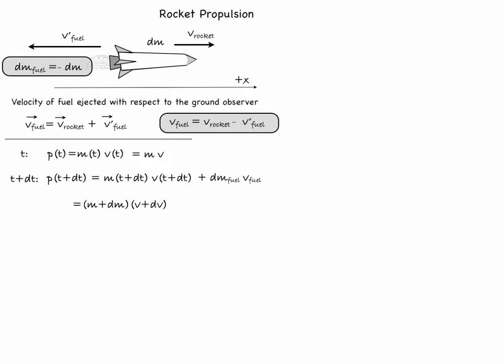We will write for the momentum of the system that is going to be equal to (m plus dm) times (v plus dv) for the rocket term and minus dm times (v minus v'_fuel) for the fuel term. Here I have dropped the subscript for the velocity of the rocket and any time when I refer to the velocity of the rocket it will be only v.